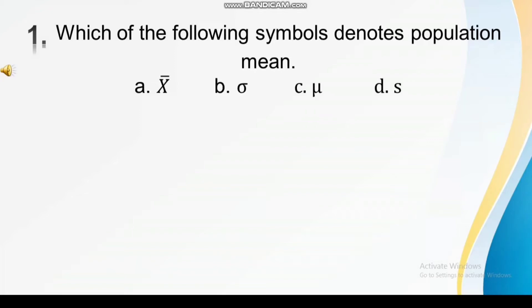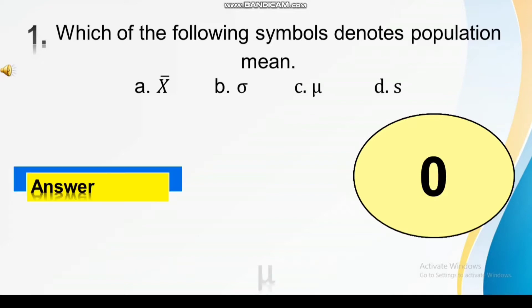Which of the following symbols denotes population mean? The correct answer is 9, 8, 7, 6, 5, 4, 3, 2, 1. Ta-da! The correct answer is...